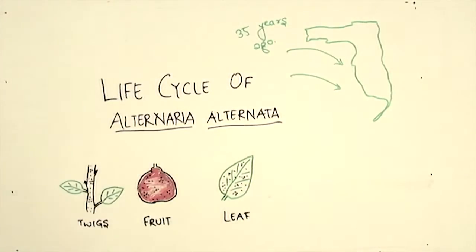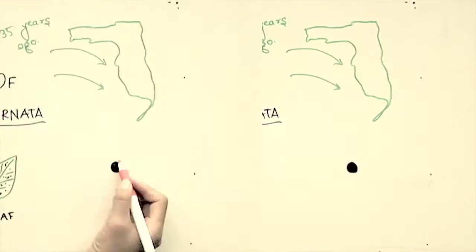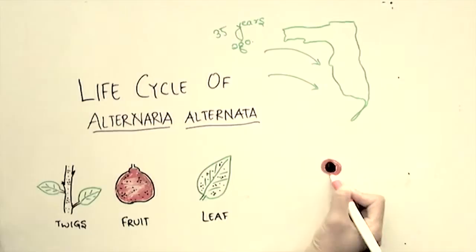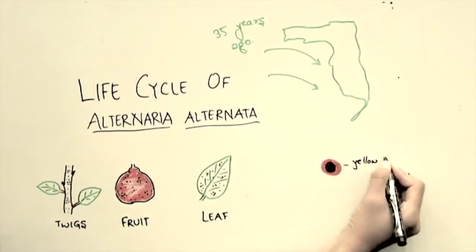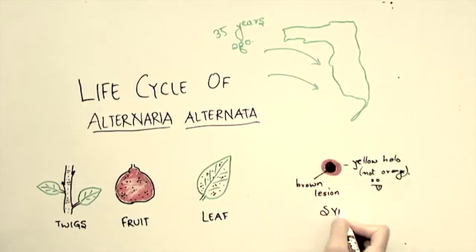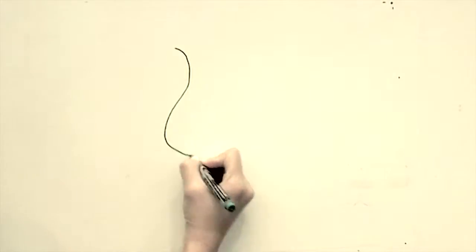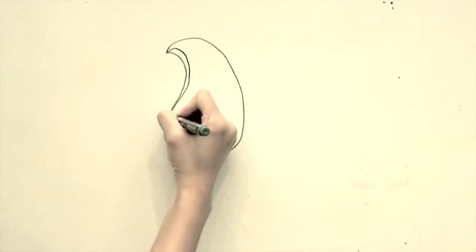Here I am drawing some infected leaf, twig and fruit. The symptoms are dark brown to black in color with a yellow halo around them, but I didn't have a yellow marker so I used orange instead. Sorry about that.